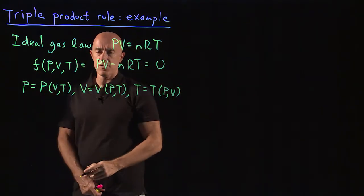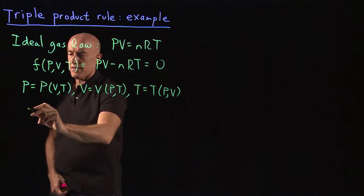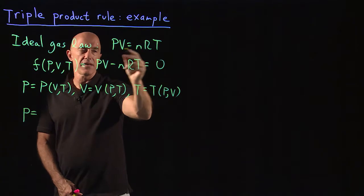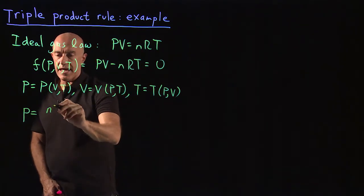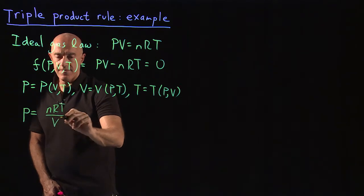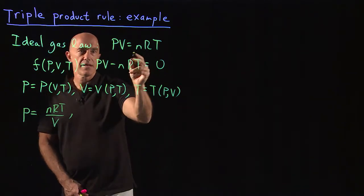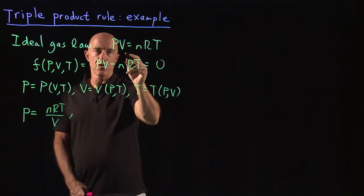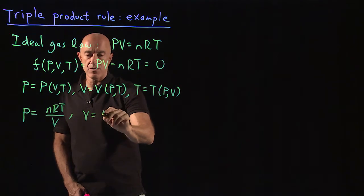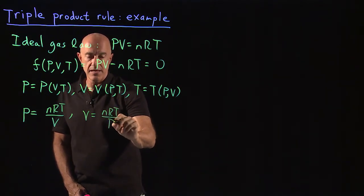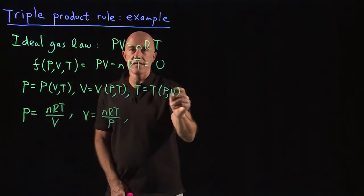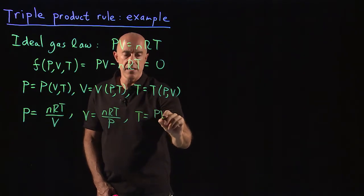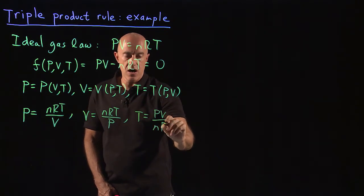So we want to see what these functions are. P equals a function of V and T: solving the ideal gas law for P, we would get nRT divided by V. V is a function of P and T: solving for V, we would get V equals nRT over P. And then T is a function of P and V, so we would get T equals PV over nR.